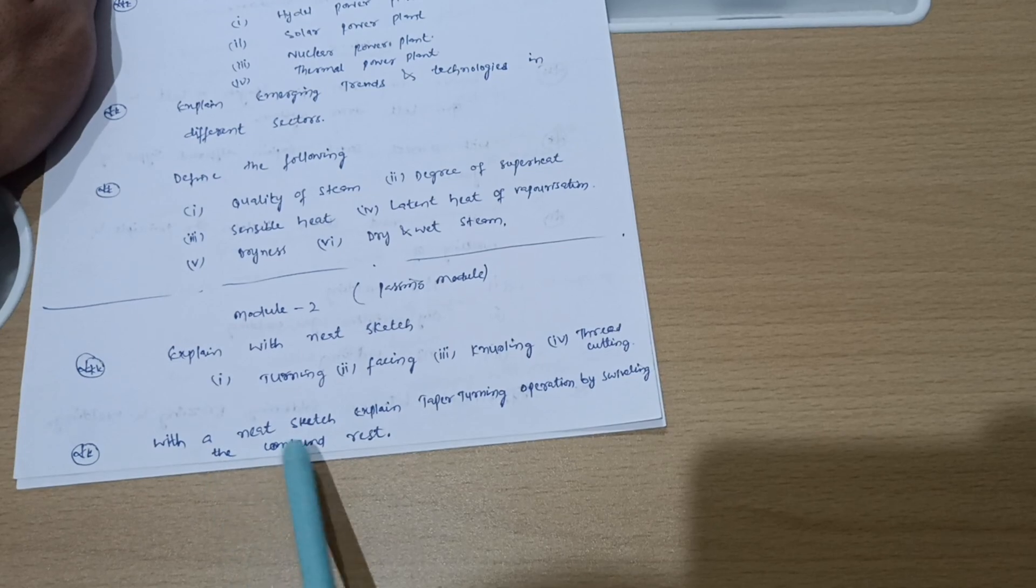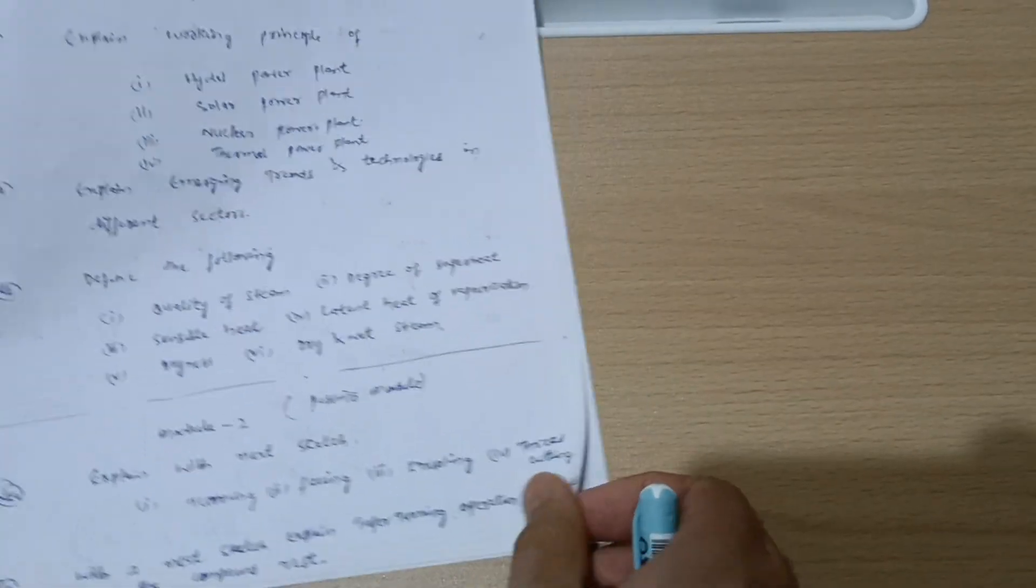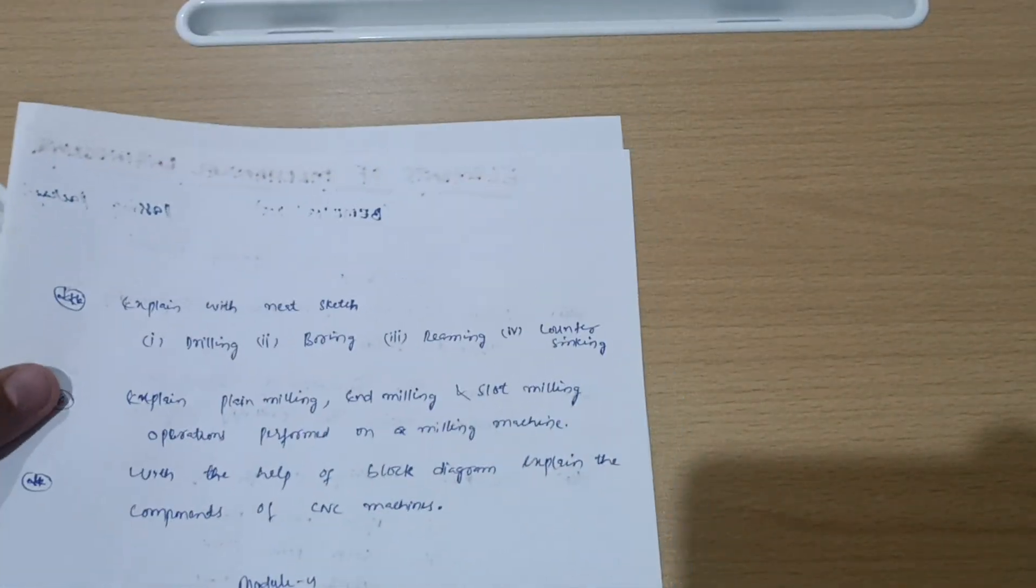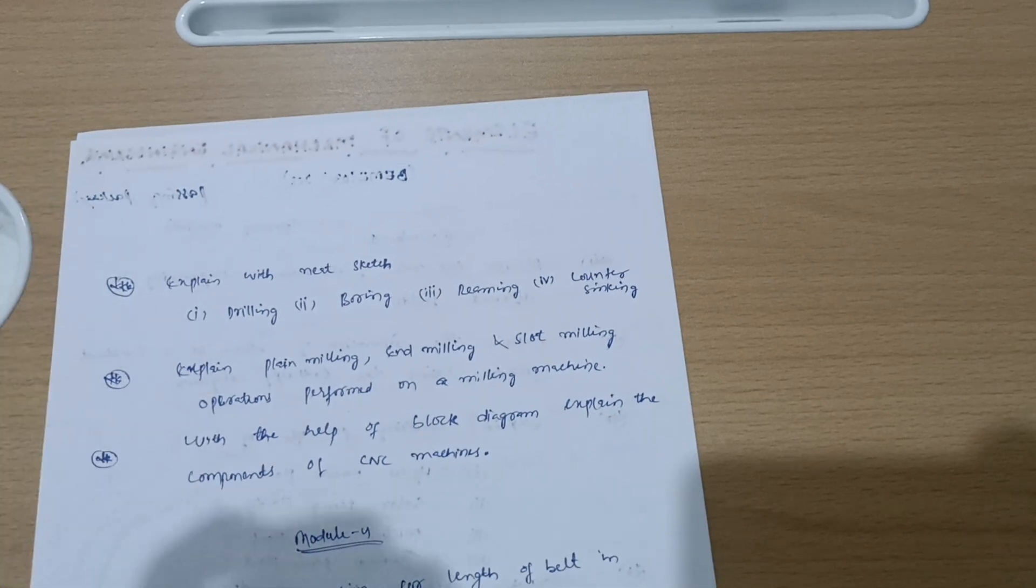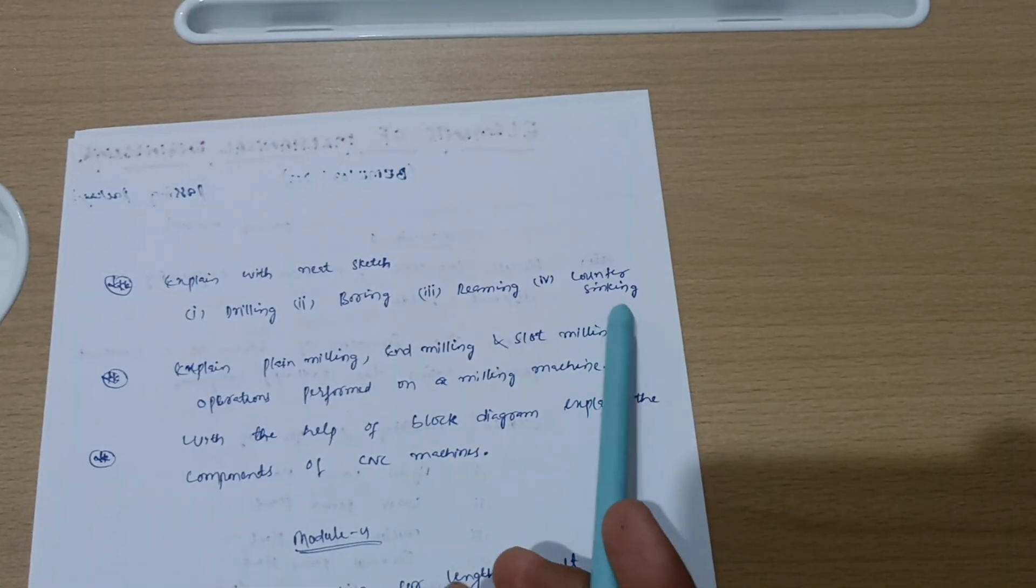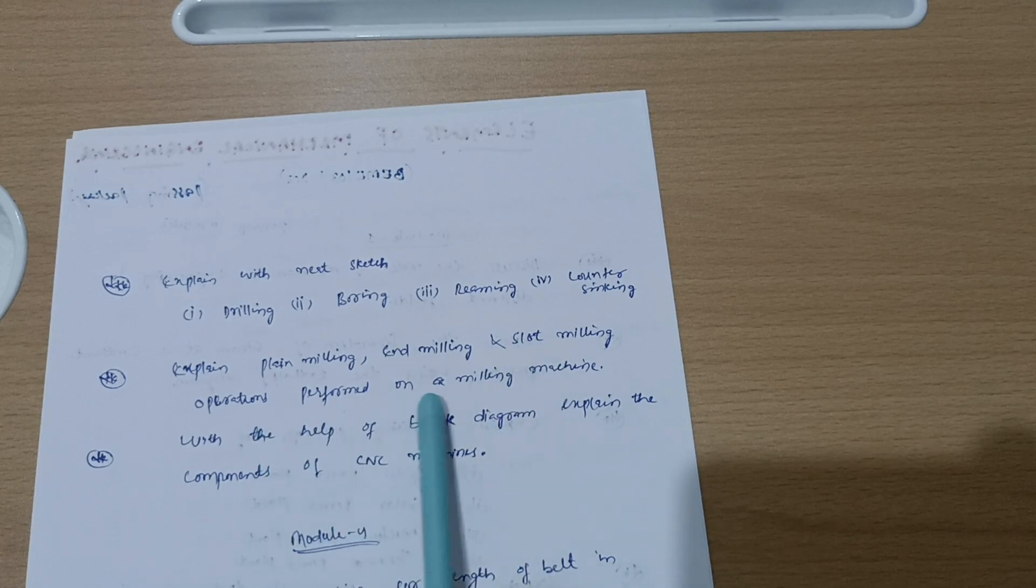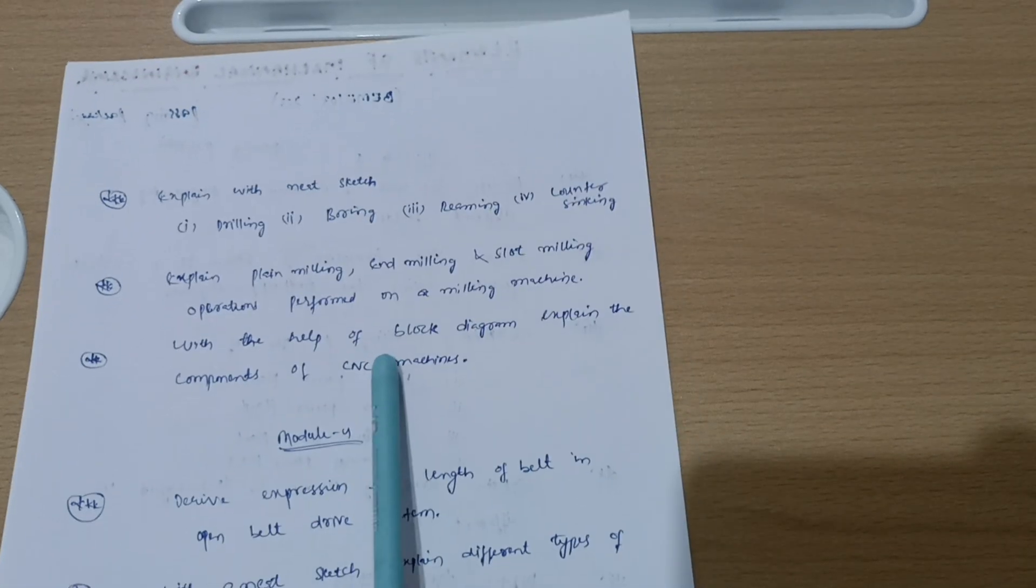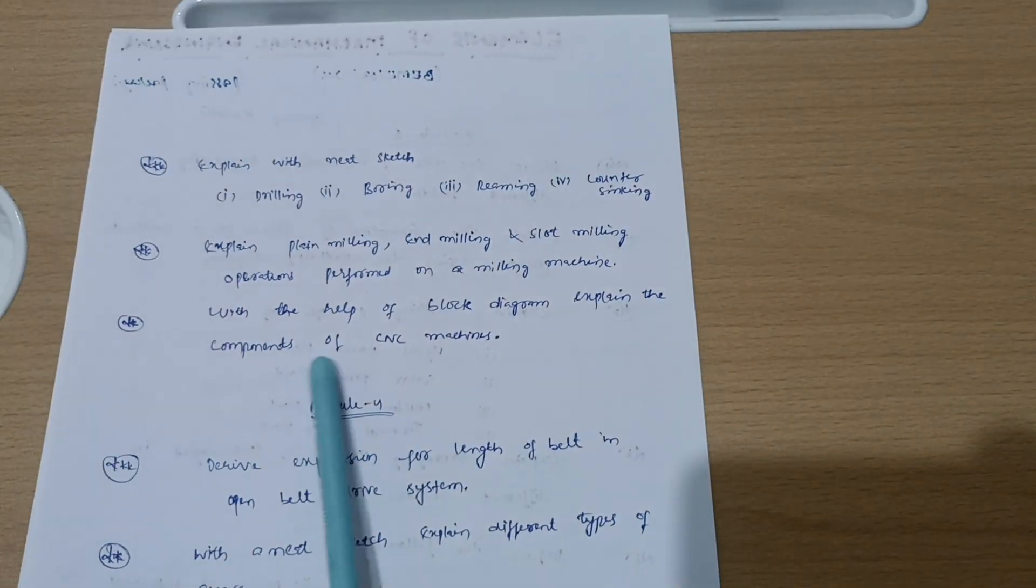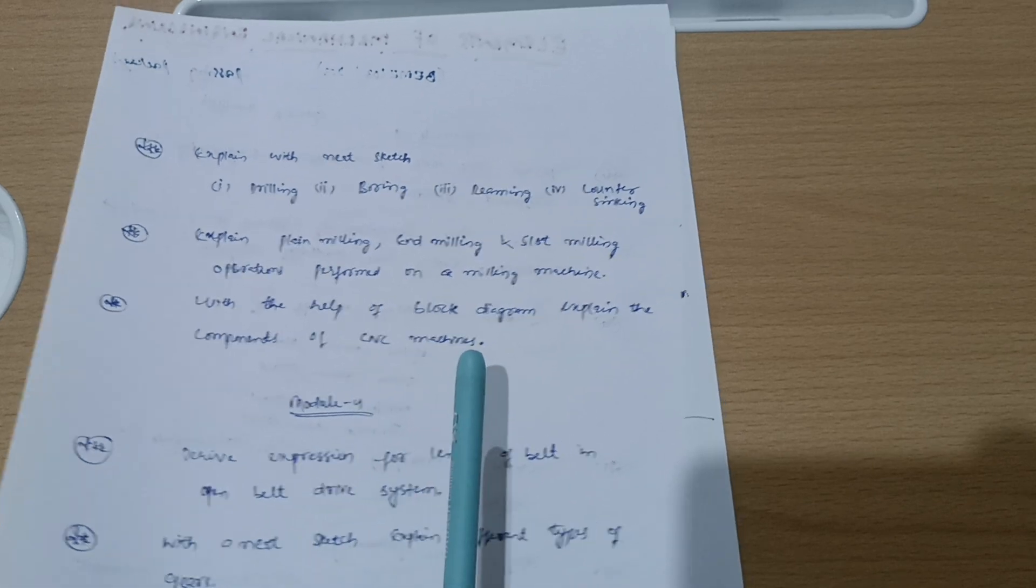With a neat sketch expand taper turning operation by surveilling the compound rest. This is super important. Next is explain with neat sketch drilling, boring, and reaming, counter-syncing. Expand plain milling and milling and slot milling operations performed on a milling machine. With the help of a block diagram expand the components of CNC machines.